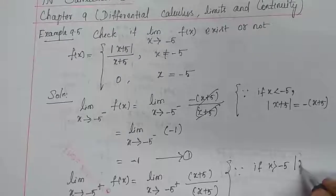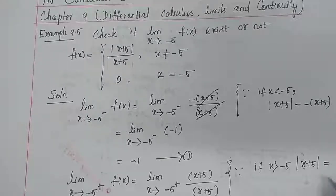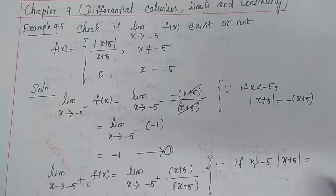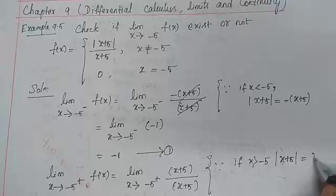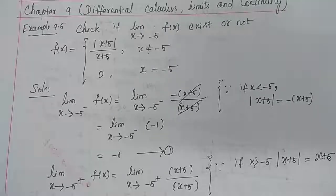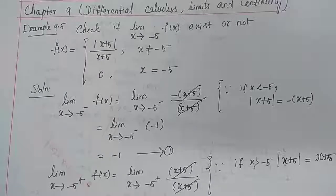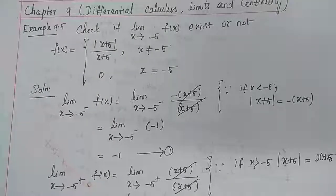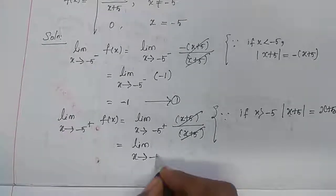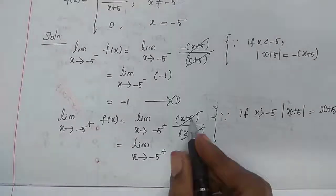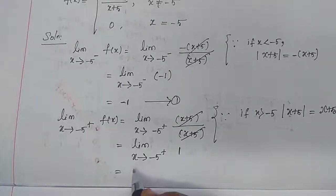When x > −5, |x+5| = x+5. So the (x+5) terms cancel, and lim (x→−5⁺) f(x) = 1. There is no x term remaining, so the value of the right limit is +1. This is equation number 2.